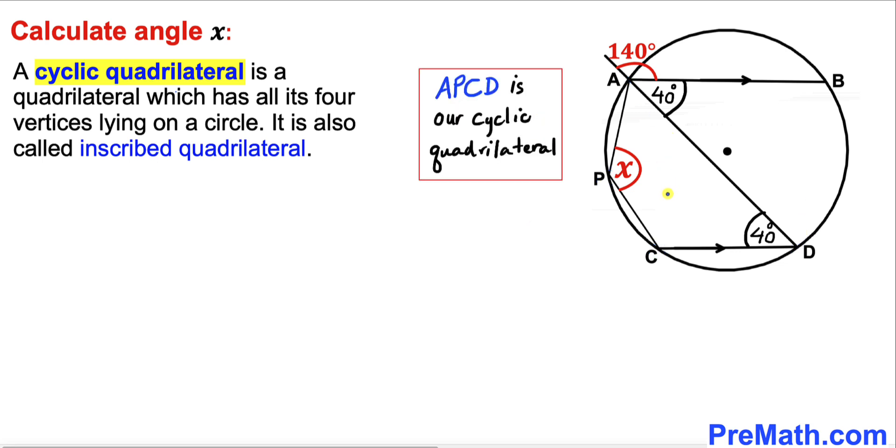So therefore, A, P, C, D is our cyclic quadrilateral. Moreover, the opposite angles in a cyclic quadrilateral add up to 180 degrees. In other words, the sum of these two opposite angles is going to be equal to 180 degrees.